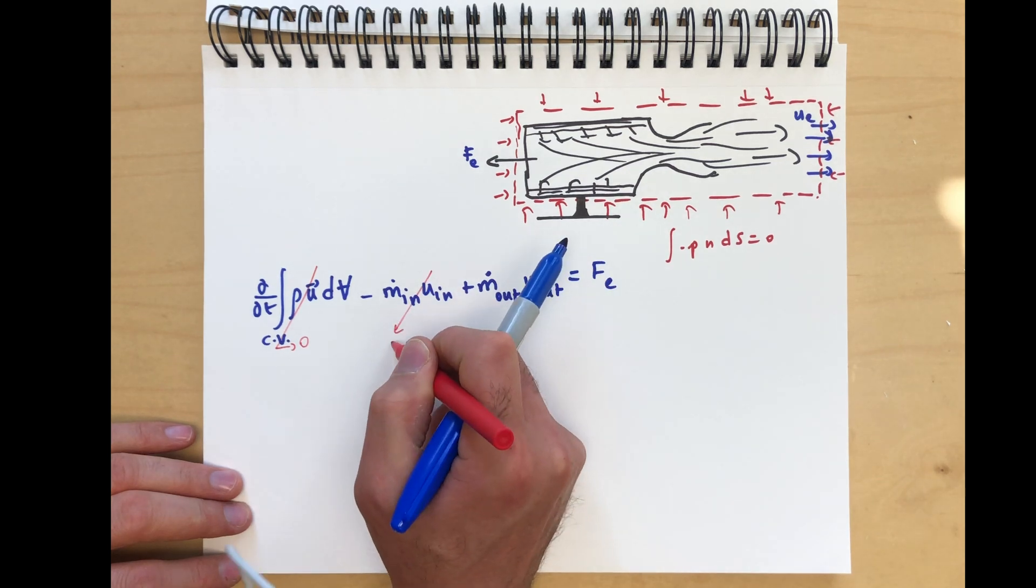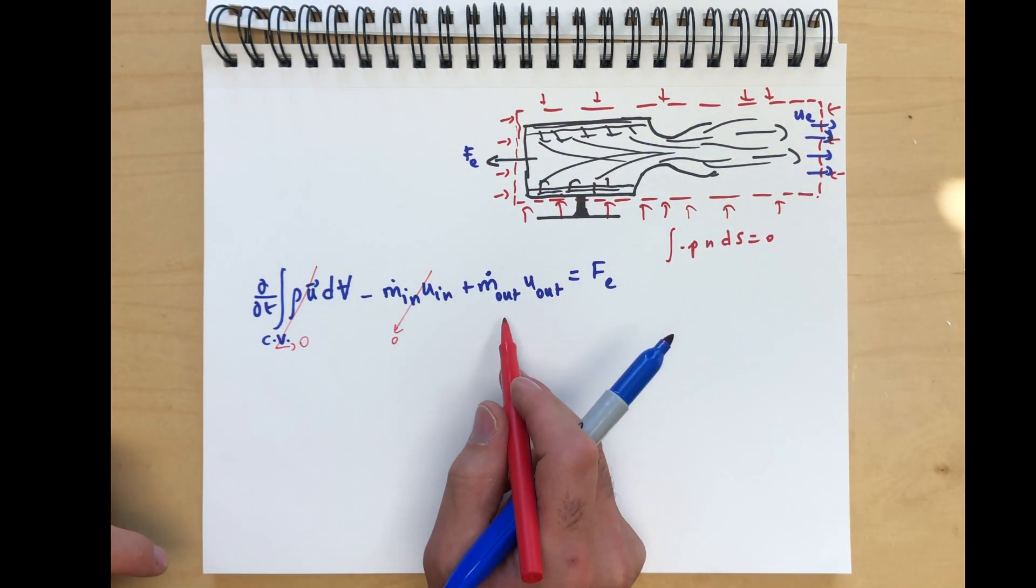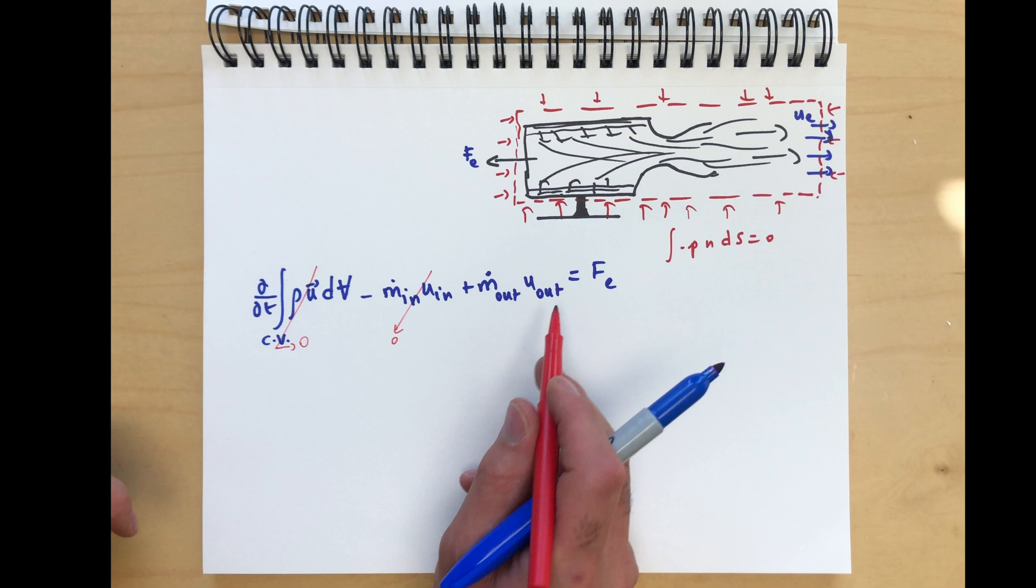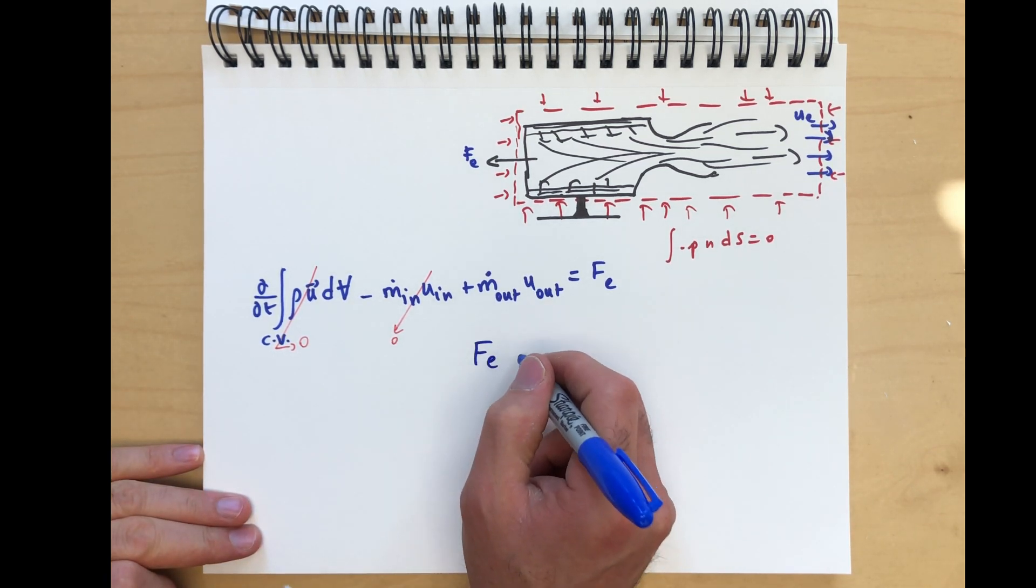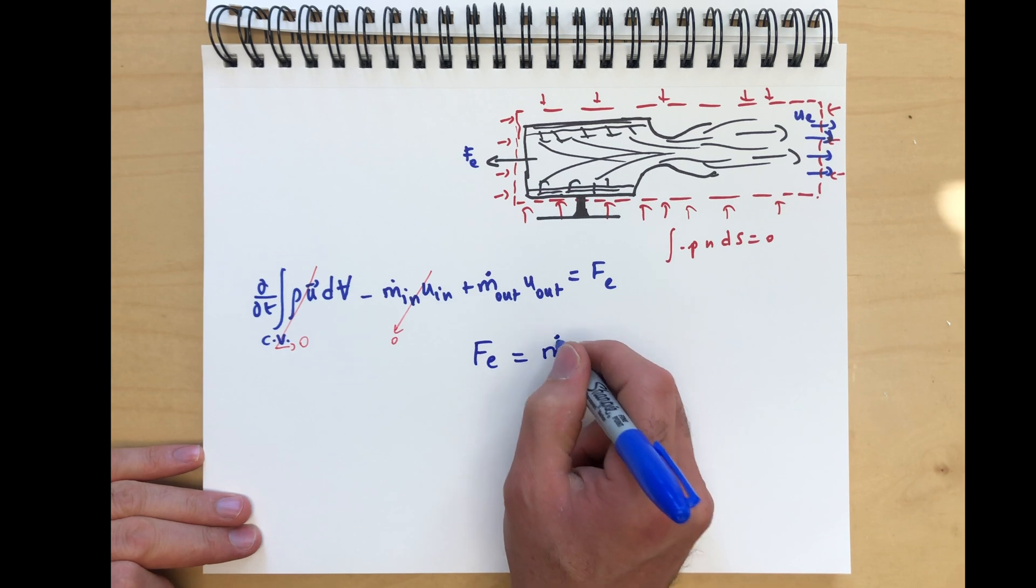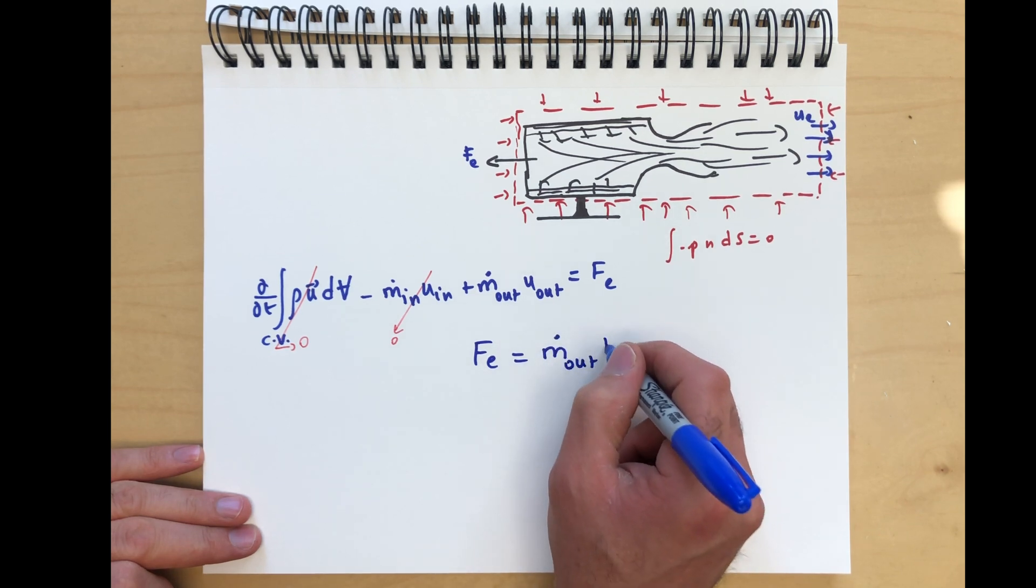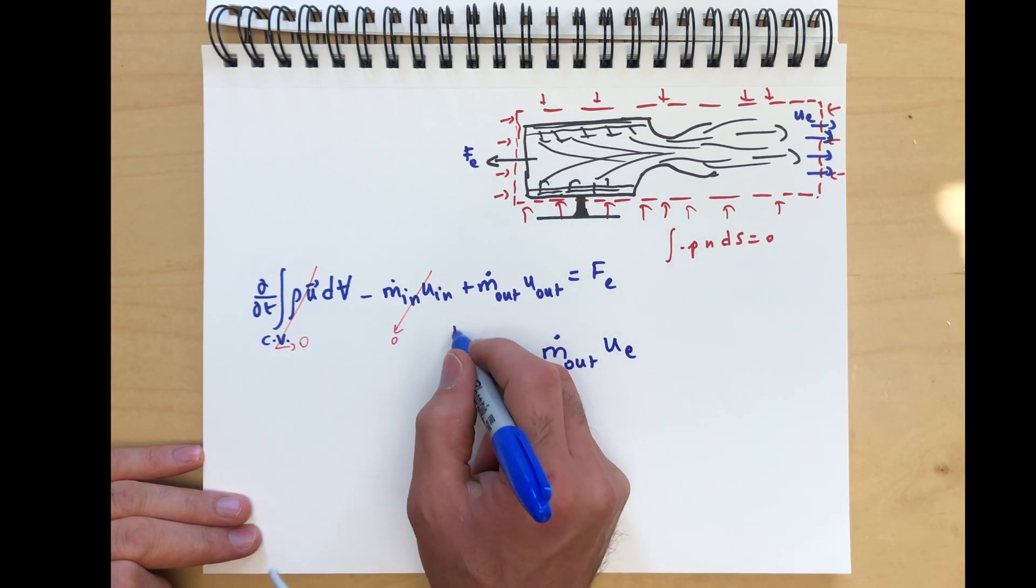There's no inlet velocity into the control volume. The only thing that changes is ṁ_out u_out. So that gives us the thrust force. F_e is ṁ_out u_exit or ṁ_e u_e.